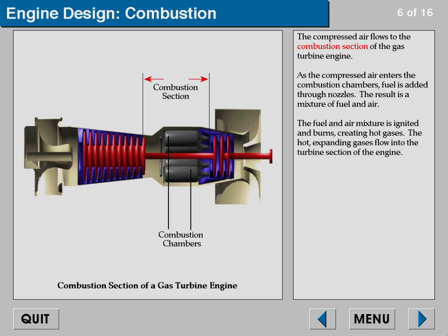The compressed air flows to the combustion section of the gas turbine engine. As the compressed air enters the combustion chambers, fuel is added through nozzles. The result is a mixture of fuel and air. The fuel and air mixture is ignited and burns, creating hot gases.